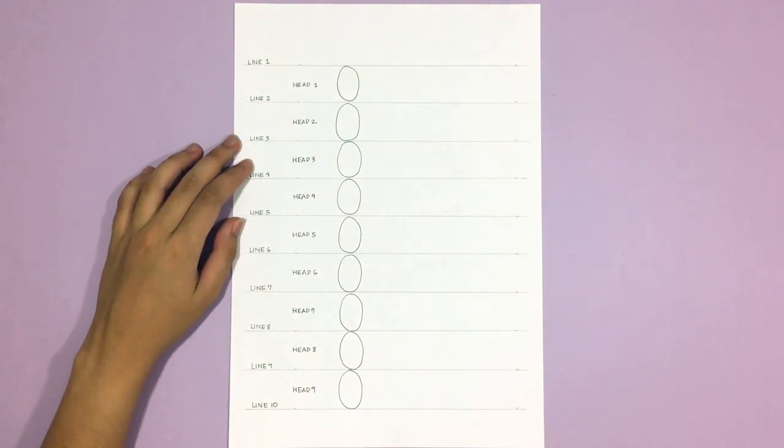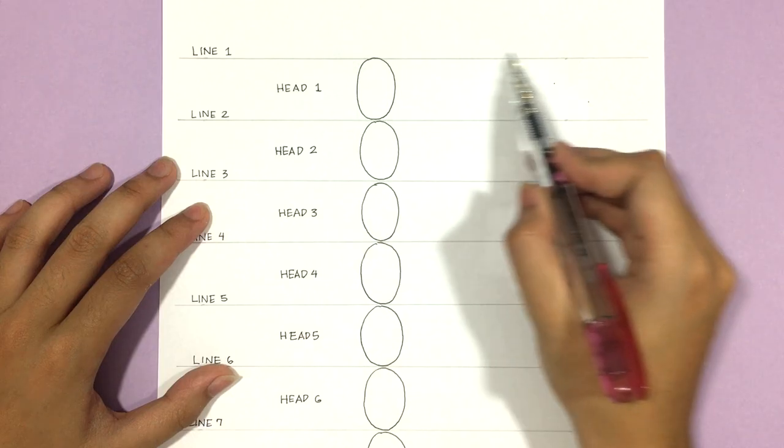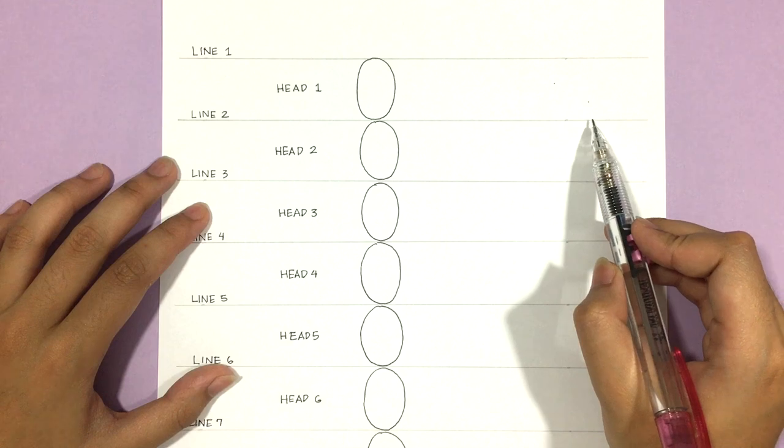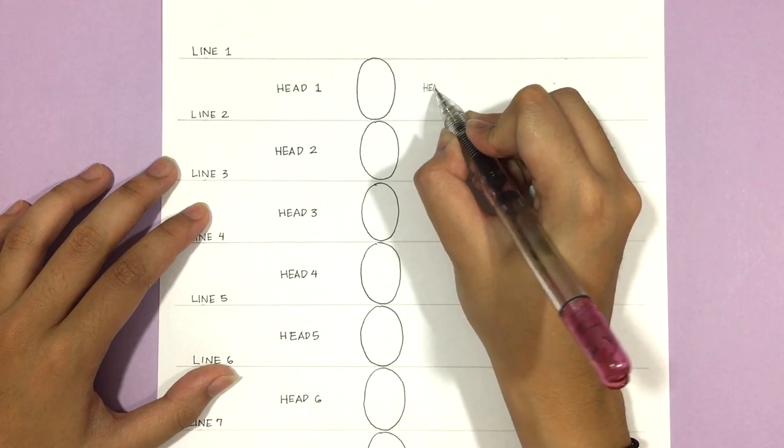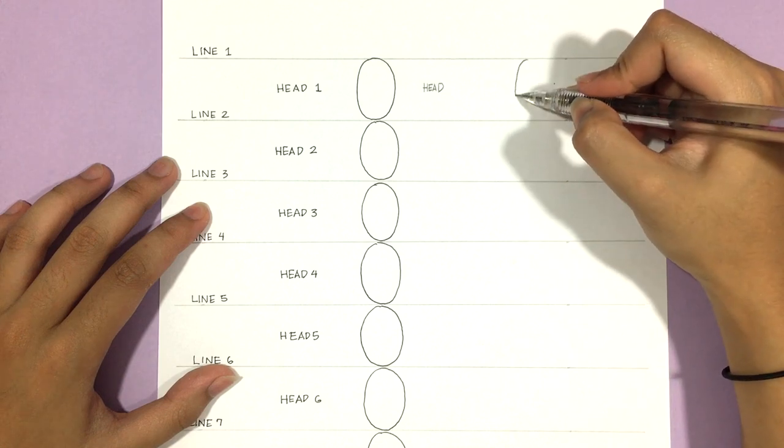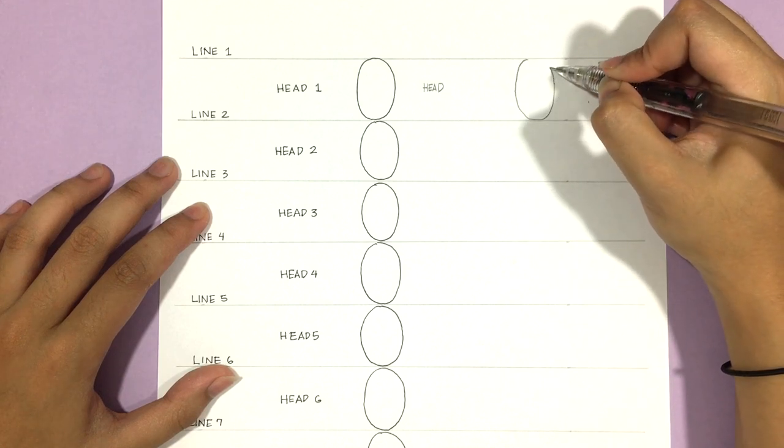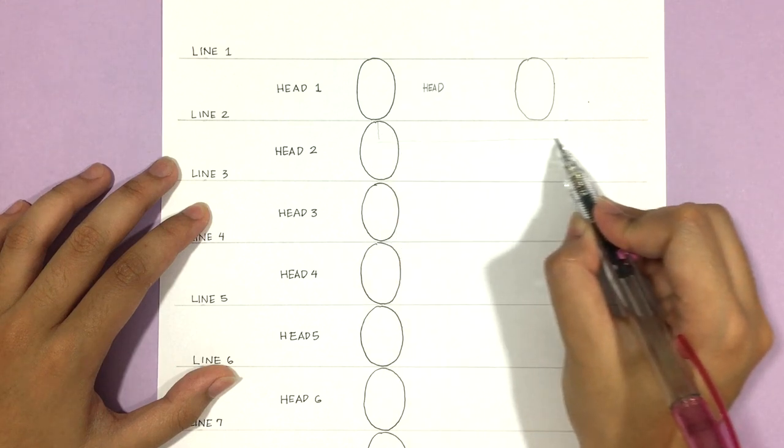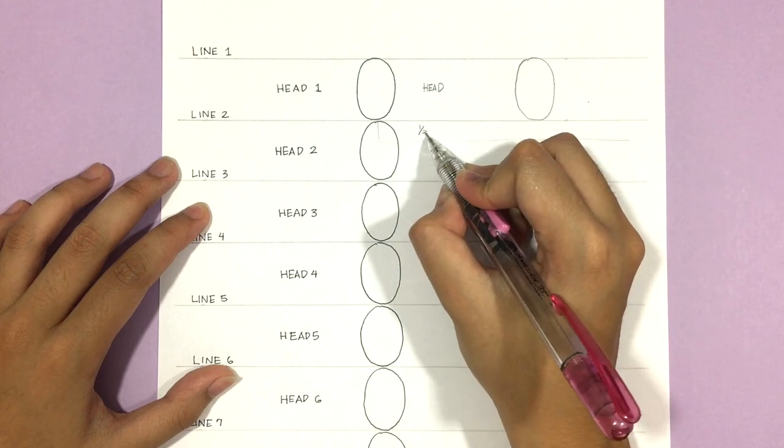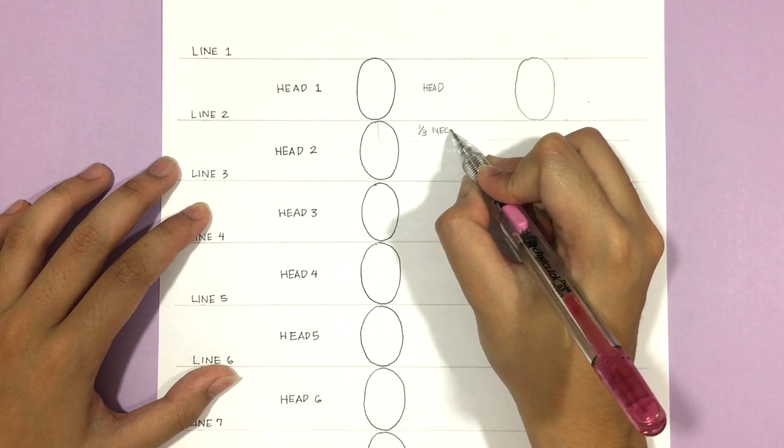So now onto the measurements. Between line one and line two is, of course, the head. So I'm drawing an oval shape. Then a third from the top of head two is the neck. So I'm just drawing two lines down.